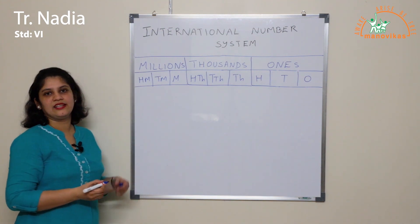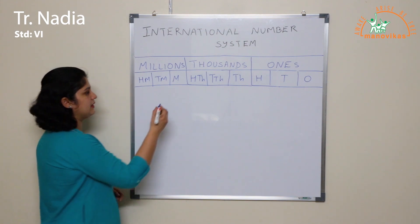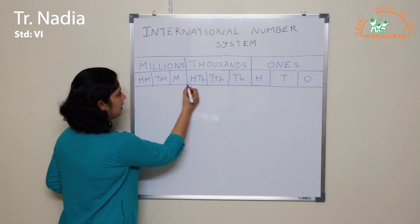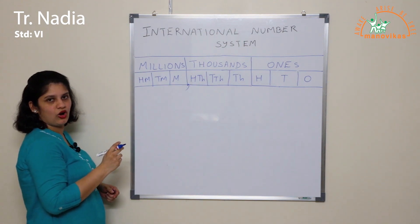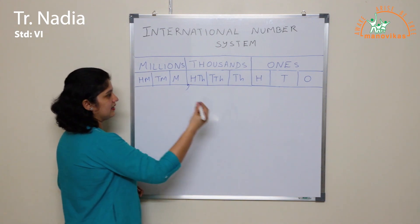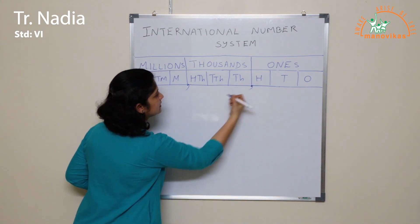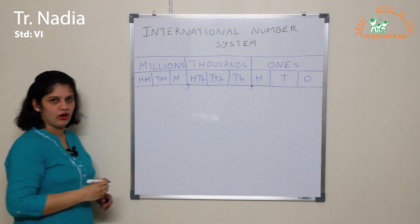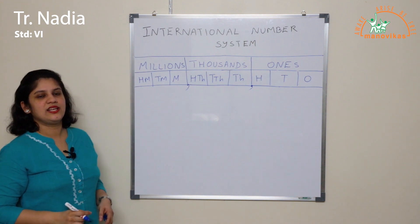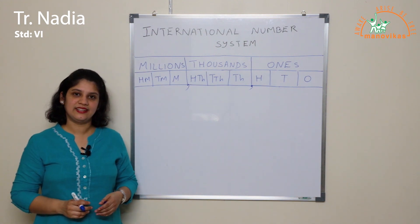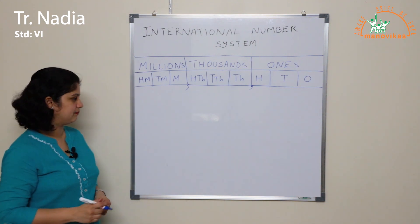Every period is separated from the next period by a comma. So the Millions are separated from the Thousands by a comma, and the Thousands are separated from the Ones by a comma. Let us now see how we can read a number in the International Number System.